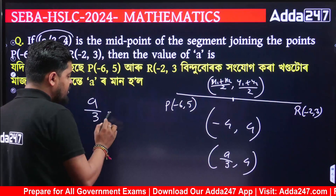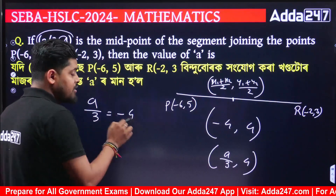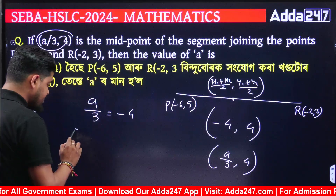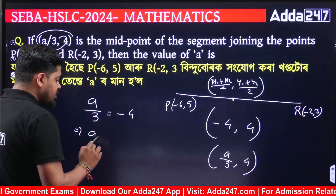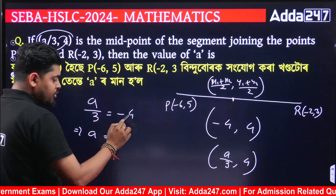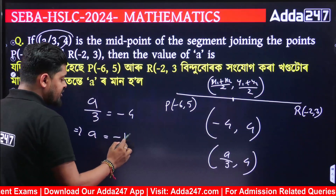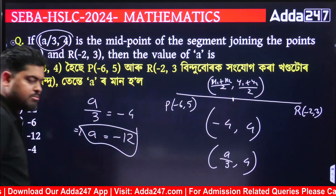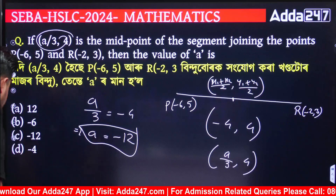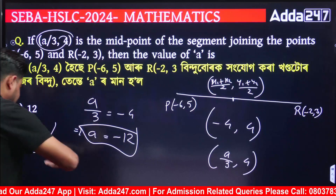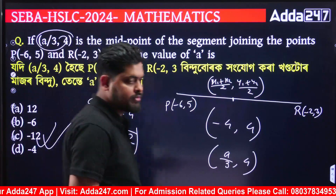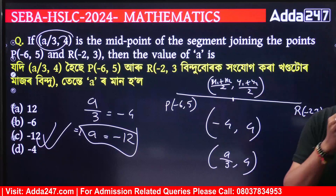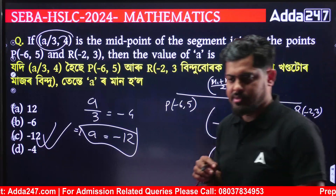A by 3 is equal to minus 4, so a equals minus 12. Option C is the correct answer.